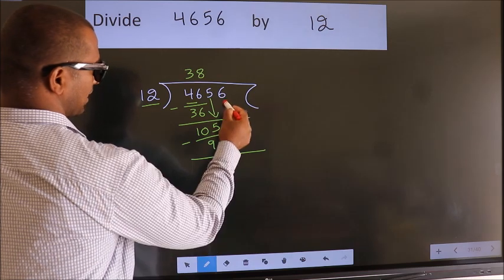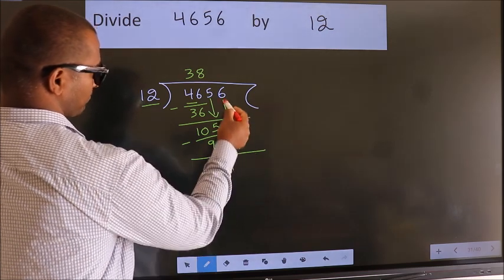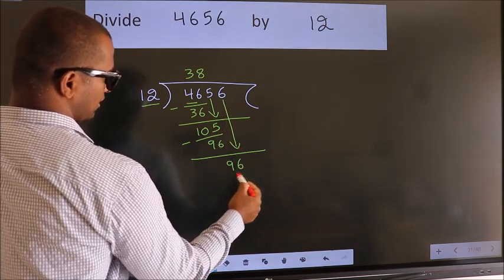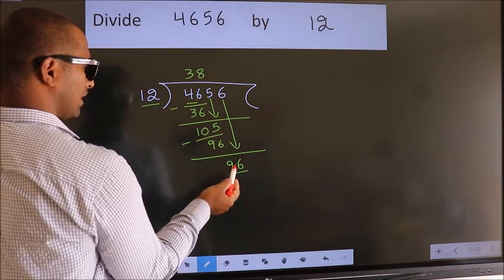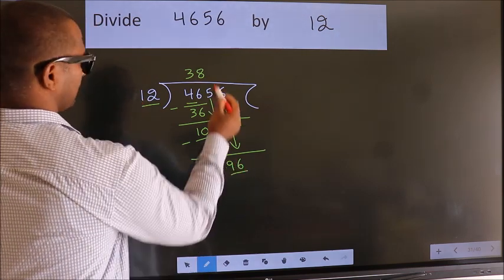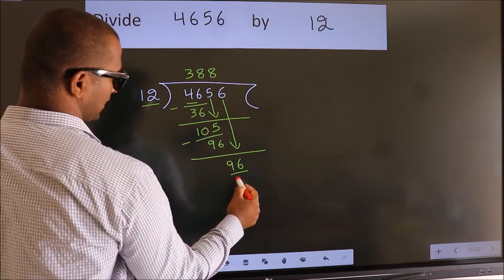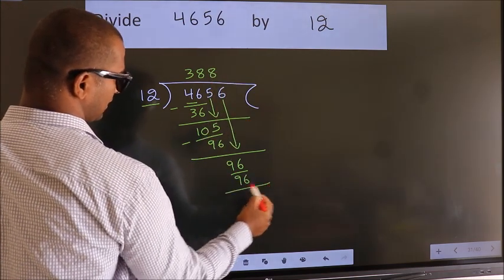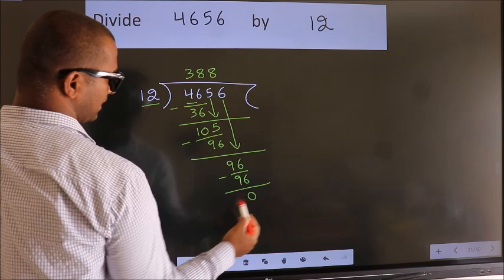After this, bring down the beside number. So 6 down. So 96. When do we get 96 in the 12 table? 12 eights, 96. Now we subtract. We get 0.